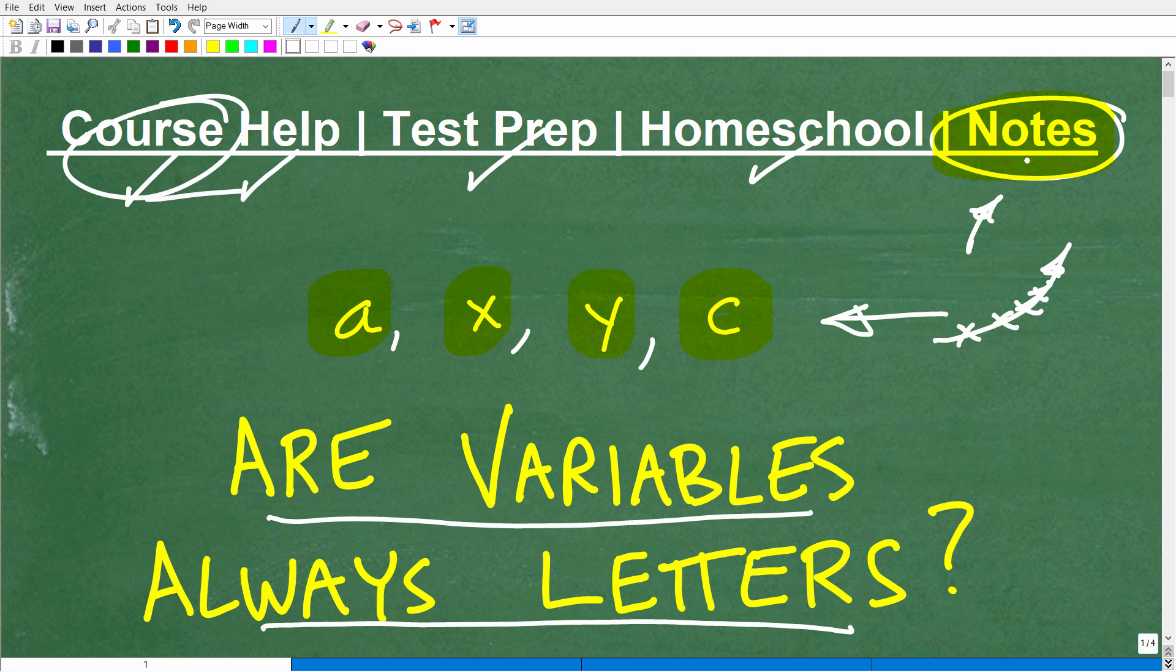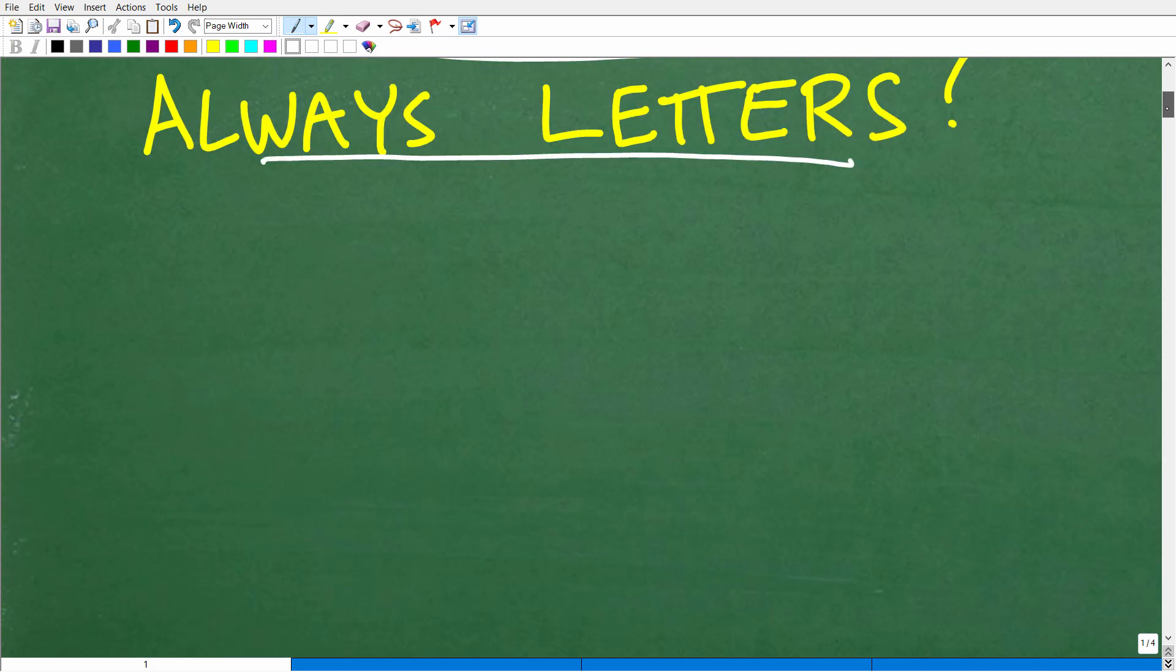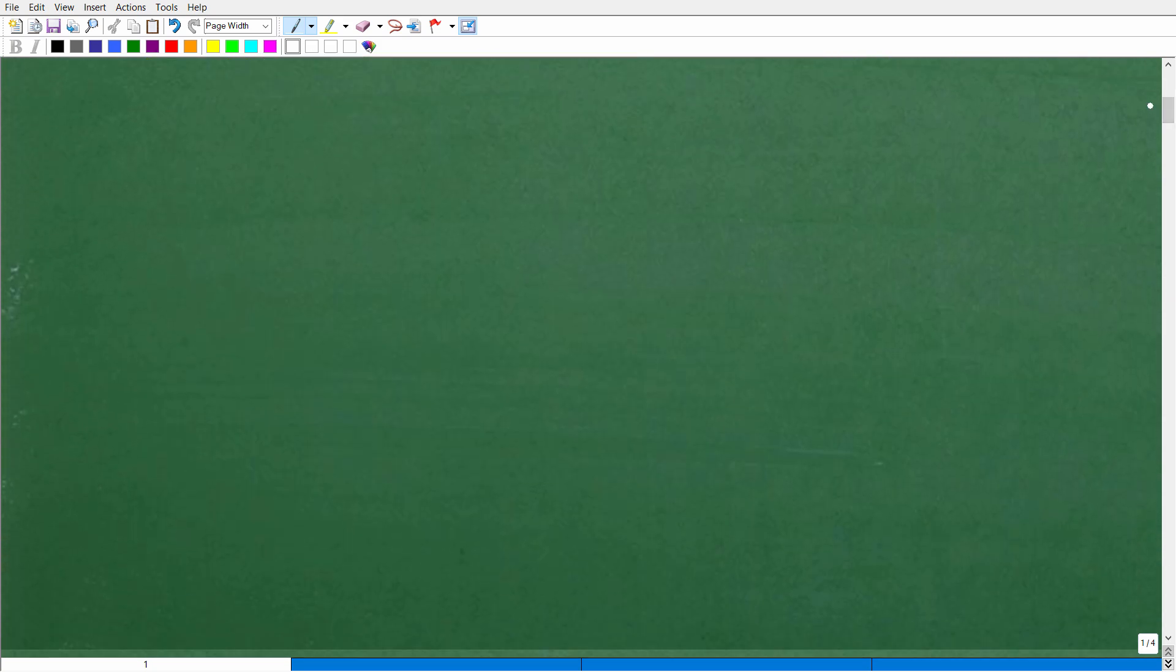But let's get into variables. So what do you think? Can you give me an example in algebra where we have a variable or variables that aren't represented by a letter? So can you think of anything, a variable that doesn't have a letter but is a variable? So think about that for a second.